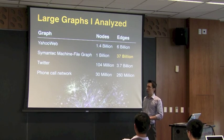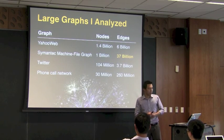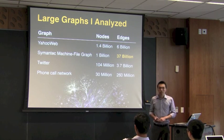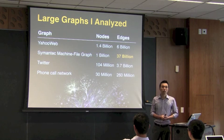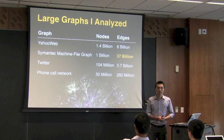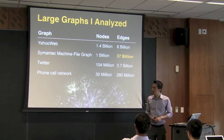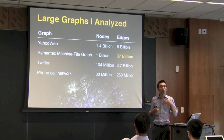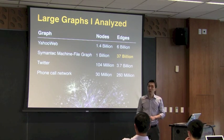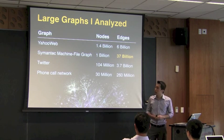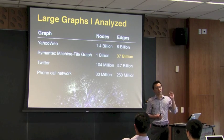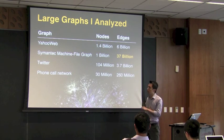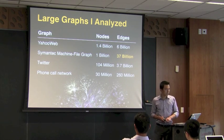Here are some example large graphs I personally analyzed in my thesis. These graphs are on the order of a million or a billion nodes and edges. The largest one is from Symantec — it's a graph describing over 37 billion relationships between machines and files, where a file is linked to a machine if the file appears on that machine.